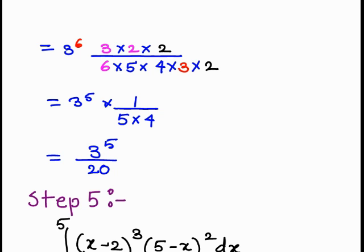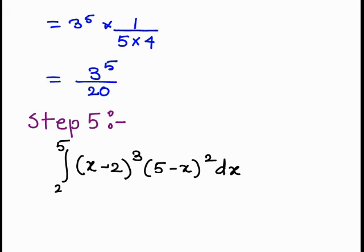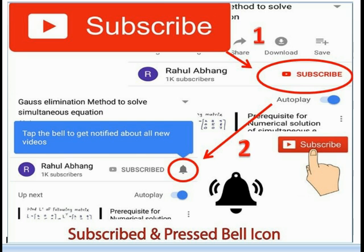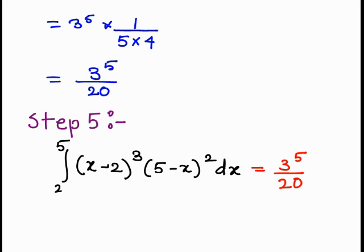So the final conclusion is: the integration from 2 to 5 of (x minus 2) raised to 3 times (5 minus x) raised to 2 dx equals 3 raised to 5 upon 20. Please subscribe the channel and press the bell icon to get new updates.